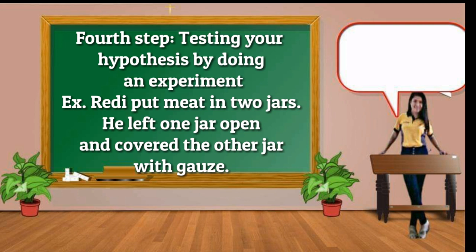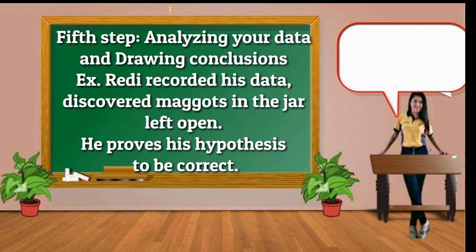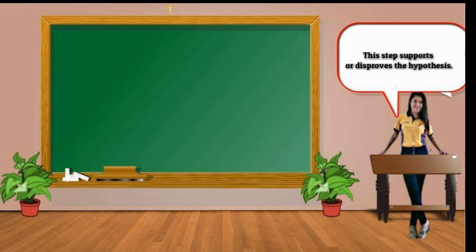Doing background research. An experiment is a controlled scientific study of specific variables. So the fourth step is doing an experiment. Please read.